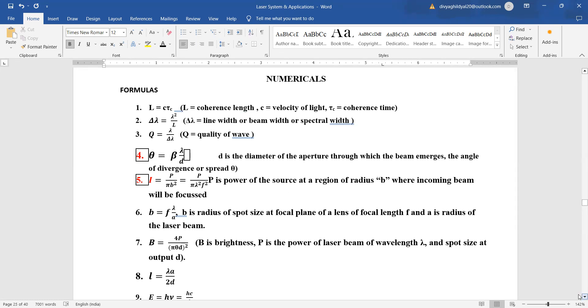Intensity is power upon area, where you can also write it as p upon b square. B is radius of the spot size at focal length. B is radius of focal length f and a is radius of laser beam. Brightness is given by 4p upon pi theta d whole square.